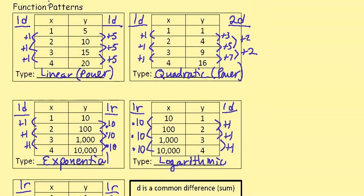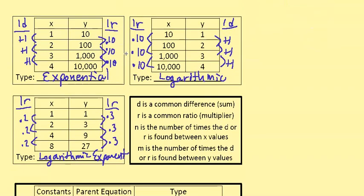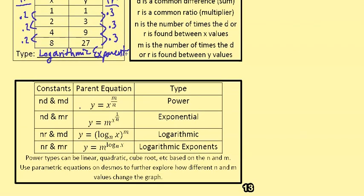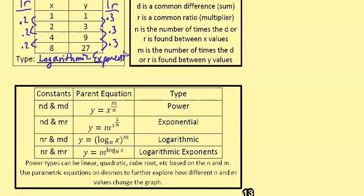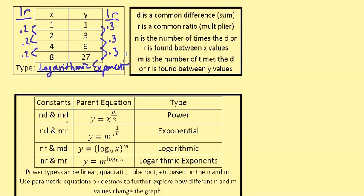By switching the input and output for a quadratic, you get a square root function — that's the inverse of a quadratic. A summary table at the bottom shows: constant difference and constant difference gives a power function; constant difference and constant ratio gives exponential; constant ratio and constant difference gives logarithmic; and constant ratio with constant ratio is the uncommon case we won't focus on.